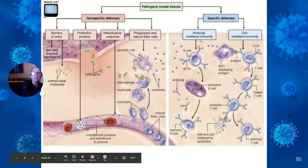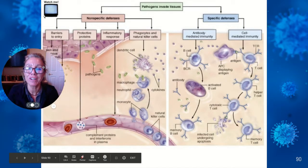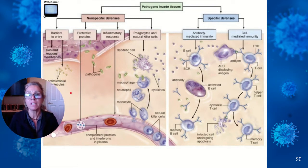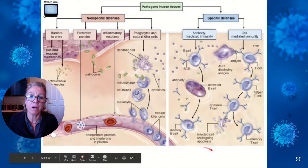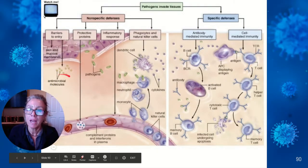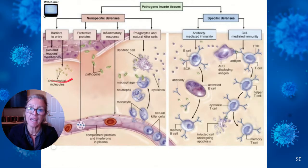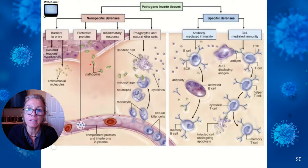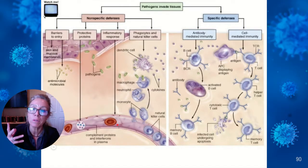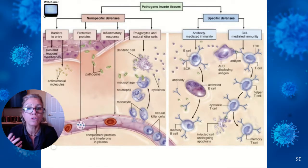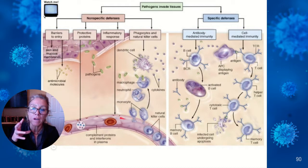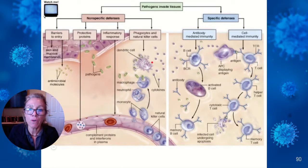This is showing you the full picture — putting it all together. These are your non-specific defenses: you have barriers to entry like skin, mucous membranes, and hair; you have protective proteins that can be released; you have the entire inflammatory response. Mast cells secrete histamine to cause vasodilation so monocytes can get out and become macrophages. Dendritic cells engulf, and neutrophils are first on the scene and most prolific.